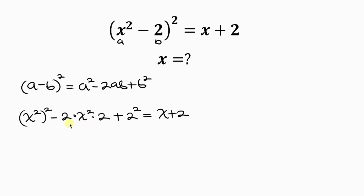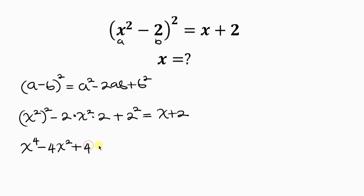Simplifying, we have x^(2×2) = x⁴, minus 2 times x² times 2 = 4x², plus 2² = 4. And this is equal to x + 2.